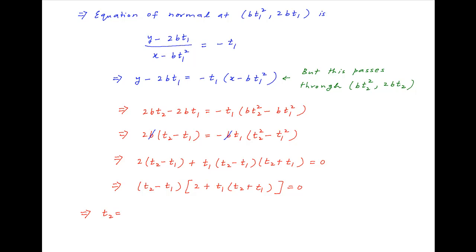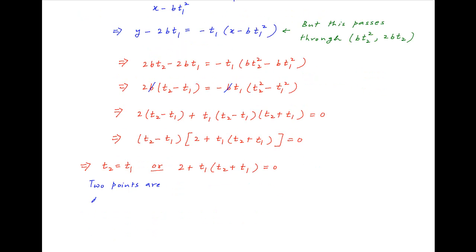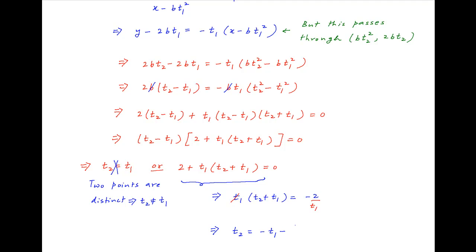This implies that either t₂ = t₁ or 2 + t₁(t₁ + t₂) = 0. The first case where t₂ = t₁ is ruled out because the two given points on the parabola are distinct, so t₂ ≠ t₁. The second case implies t₁t₂ + t₁² = −2. Dividing by t₁ on both sides and rearranging, we get t₂ = −t₁ − 2/t₁, which is the required answer.